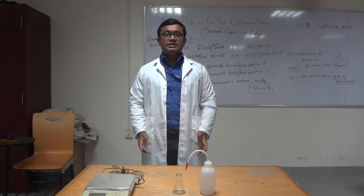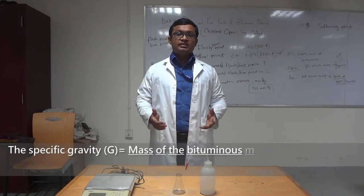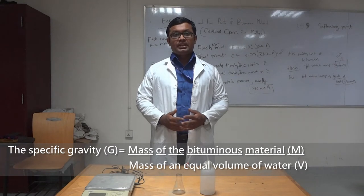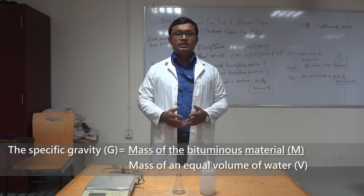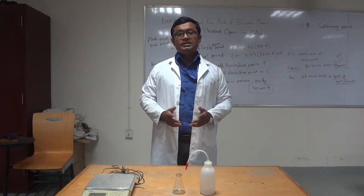The specific gravity G of the bitumen is defined as a ratio of mass of the bituminous materials M and the mass of an equal volume of water V at the specified temperature of 27 degrees Celsius.